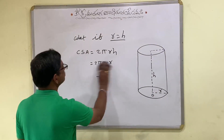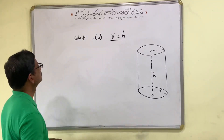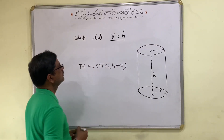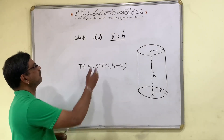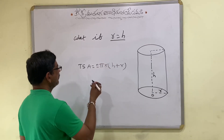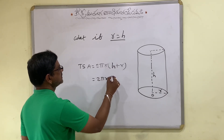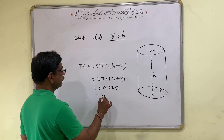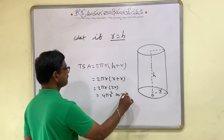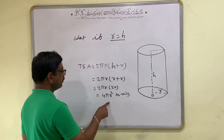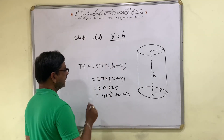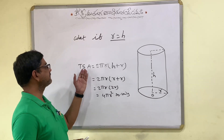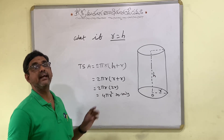Now let us see the total surface area. Total surface area of a cylinder is 2πR into H plus R. Now what happens if R is equal to H? Inserting R in place of H, we get R plus R, which gives 2πR into 2R, so 4πR square units. Total surface area of cylinder becomes 4πR square when R is equal to H. And we know that 4πR square is nothing but the total surface area of a sphere. That means total surface area of cylinder and total surface area of sphere are equal if their radii are equal.